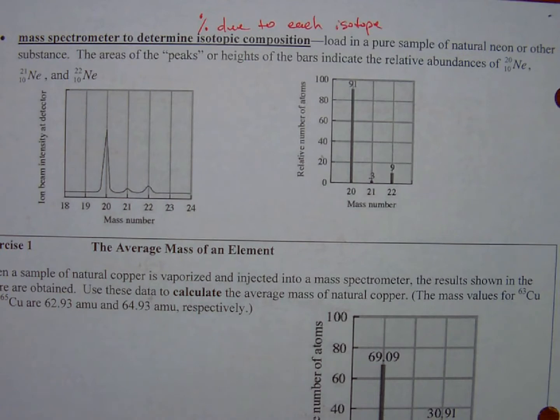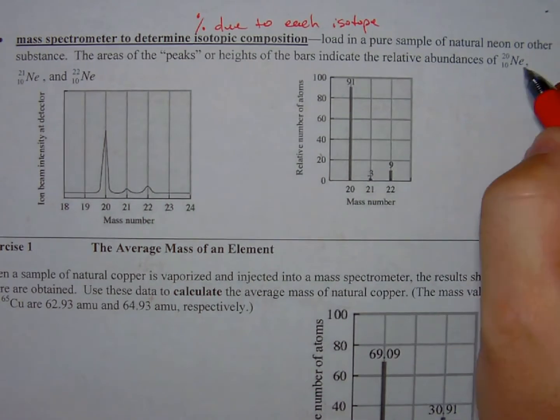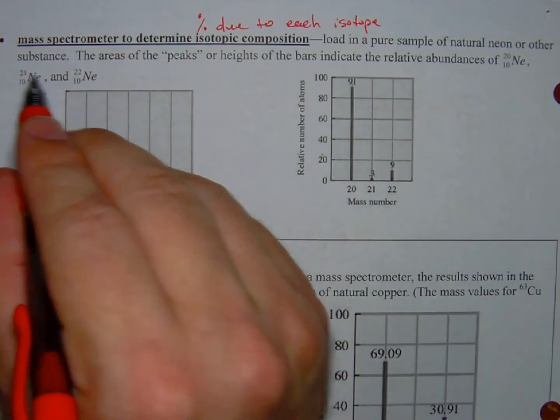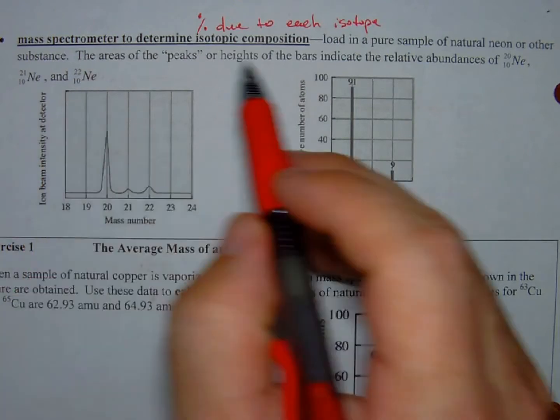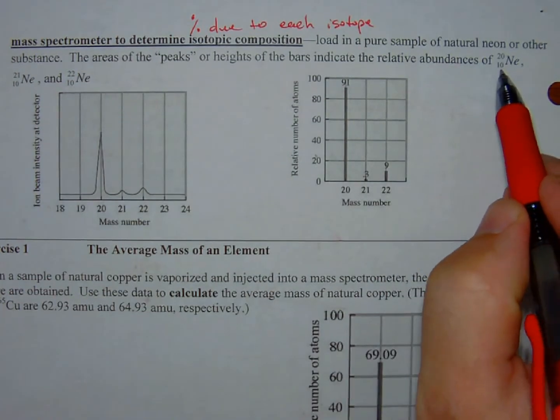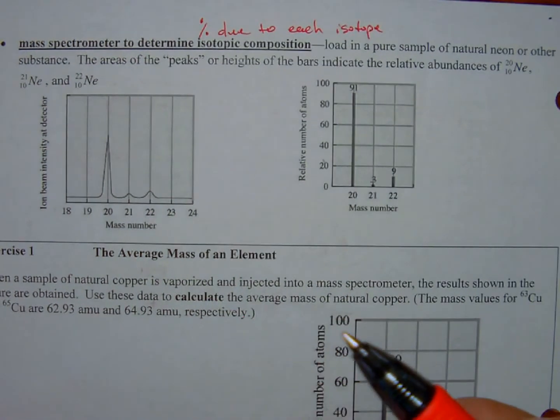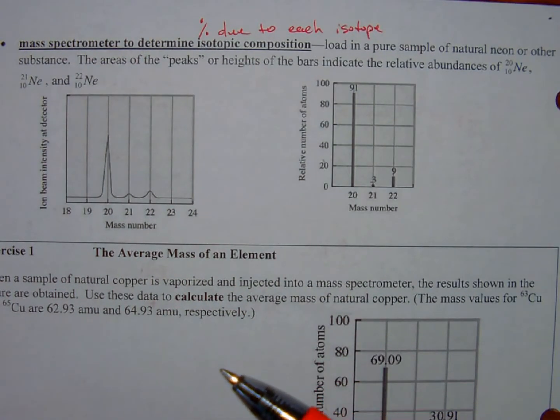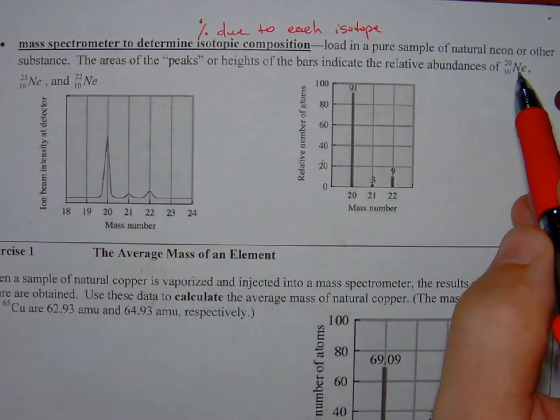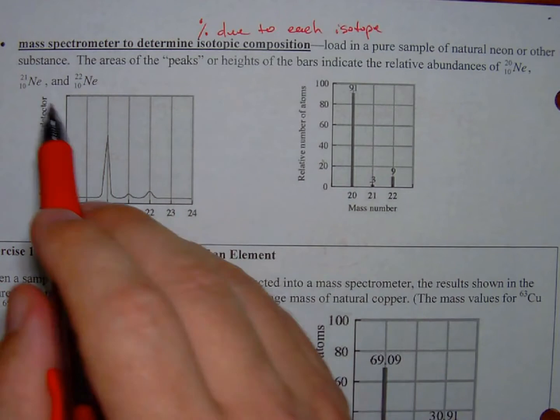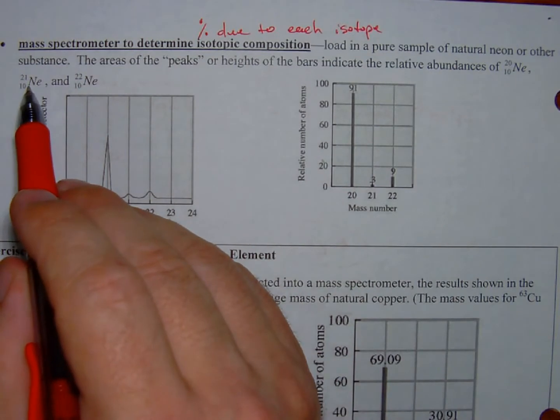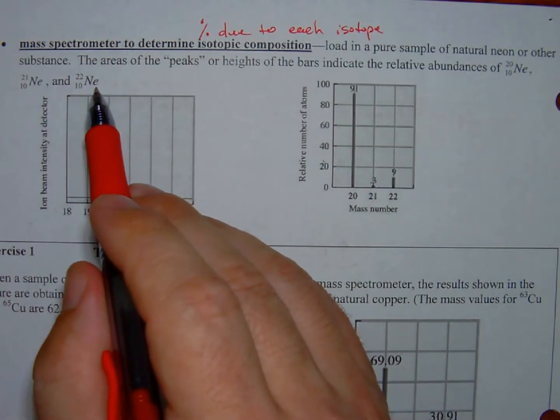The areas or the peaks or heights of the bar indicate the relative abundances of neon-20, neon-21, or neon-22. Notice that the atomic number is always 10, because neon has 10 protons - that's not going to change. As long as we're talking about neon, it's always going to be 10 protons. What may change is the number of neutrons. In neon-20, we have 10 neutrons; in neon-21, we have 11 neutrons; and in neon-22, we have 12 neutrons.